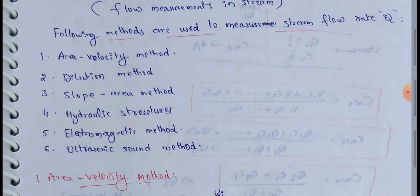We have six methods used to measure stream flow rate Q: the area-velocity method, dilution method, slope area method, hydraulic structures, electromagnetic methods, and ultrasonic sound methods.